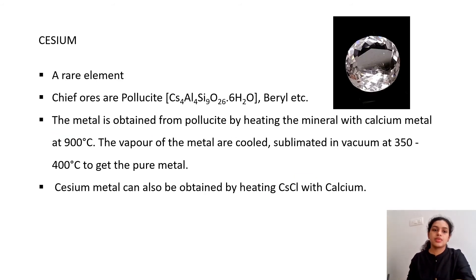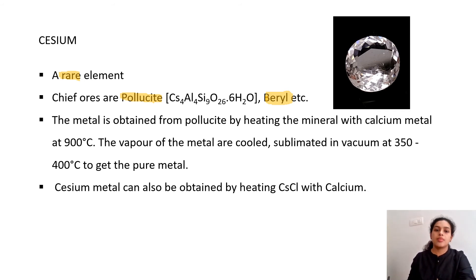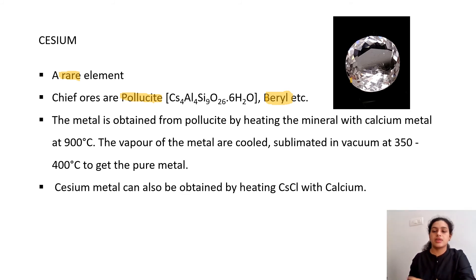Cesium is also a rare element. Its chief ore is pollucite (Cs₄Al₄Si₉O₂₆·6H₂O). Beryl is also present but is primarily an ore of beryllium. Pollucite looks like diamond — it has the same shining and luster, and is also used as a gemstone. Lepidolite has a similar appearance as well.